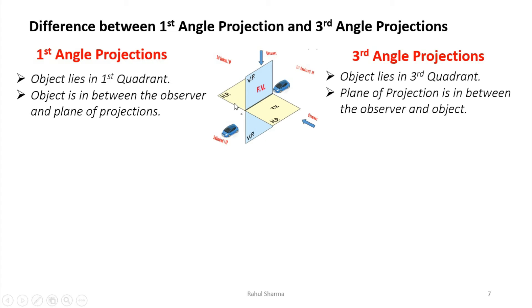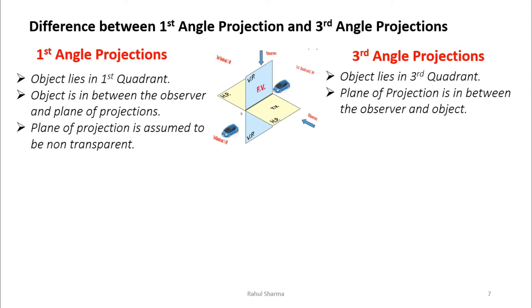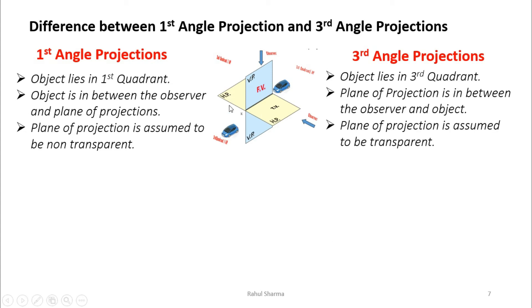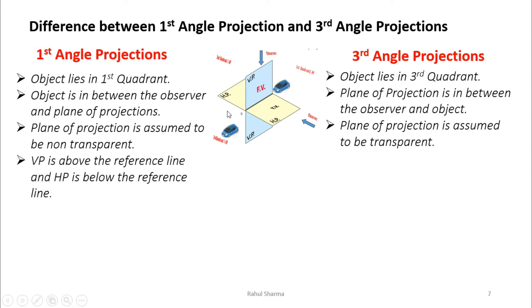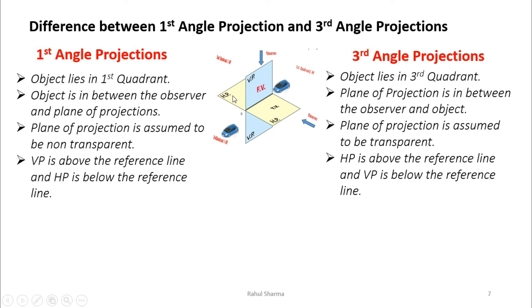In first angle projection, the plane of projection is assumed to be non-transparent, like a mirror. In third angle projection, VP and HP must be assumed as transparent glass so the observer can see the front view and top view through the glass. In first angle projection, VP is above the reference line and HP rotates to go below it. In third angle projection, HP goes above the reference line and VP is below it.